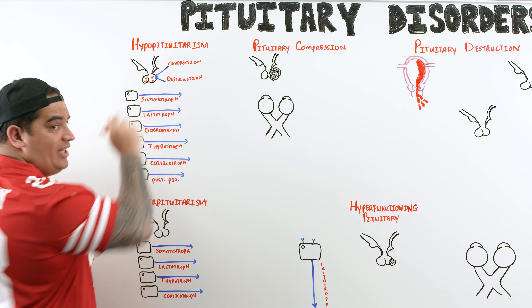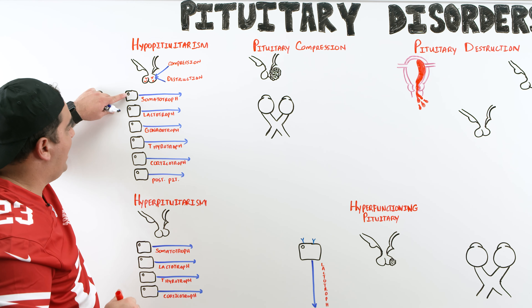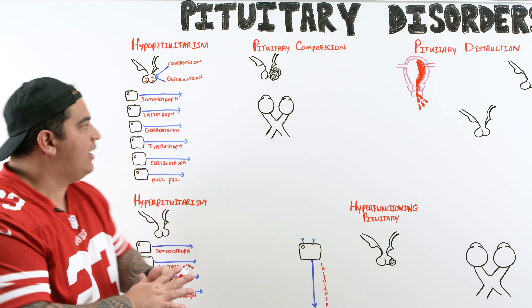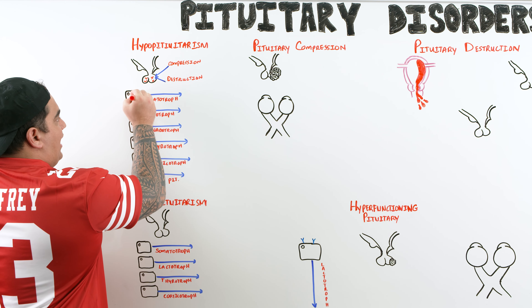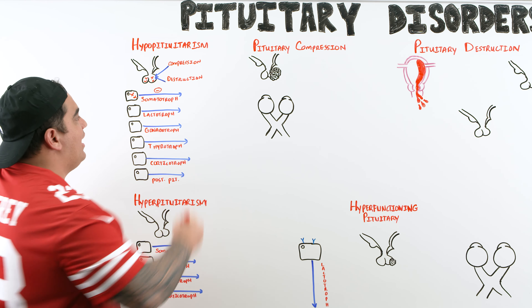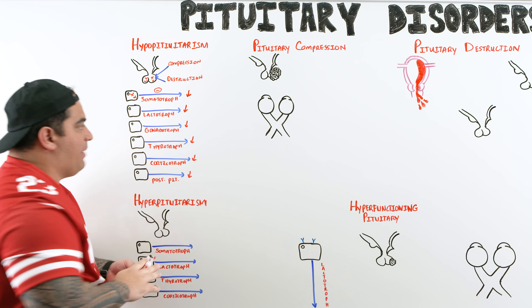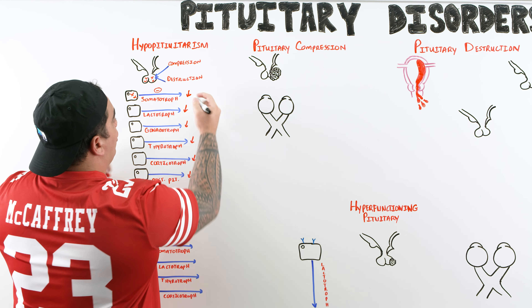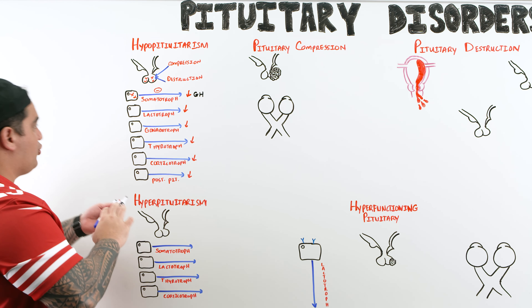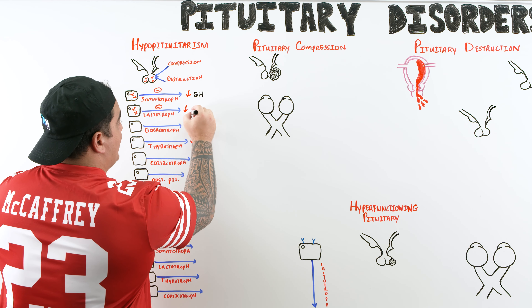When you zoom in on the anterior pituitary, there are multiple different trophic cells responsible for secreting specific hormones. If there is compression or destruction, all of these cells will have a reduction in their respective hormones. If the somatotrophs don't release growth hormone, there will be growth failure.